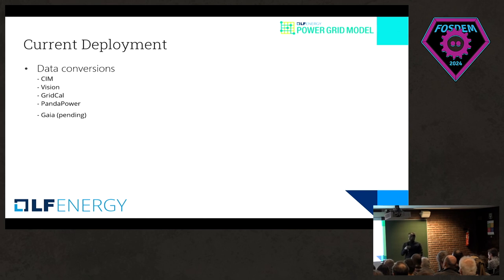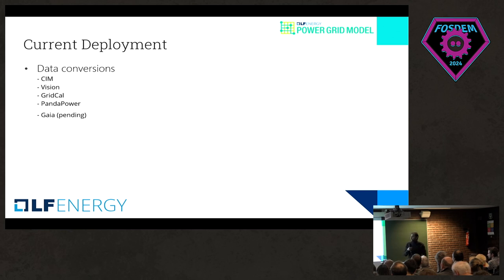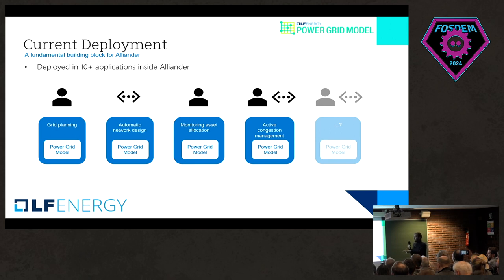We have data conversions as well, because we don't have the best data model to store everything, and hence we have conversions to SIM and other softwares used for power system analysis. SIM allows us to integrate with other applications throughout this ecosystem. We currently use it within 10-plus applications within Alliander, so it's a mature project at production grade. Those applications include grid planning, automatic network design, monitoring, asset allocation, and congestion management.